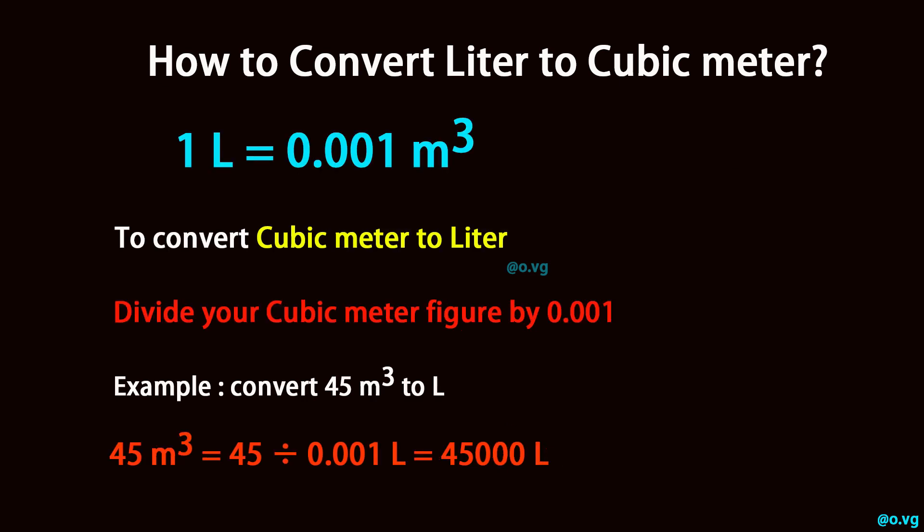To convert cubic meter to liter, divide your cubic meter figure by 0.001.